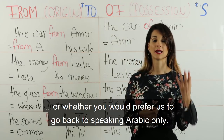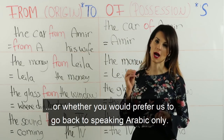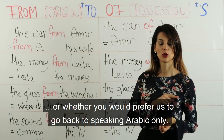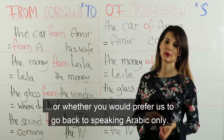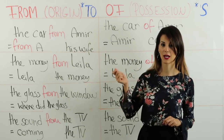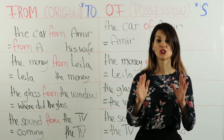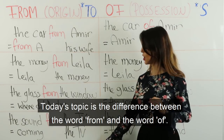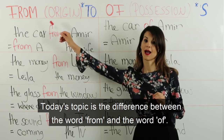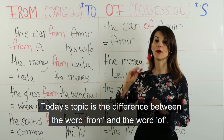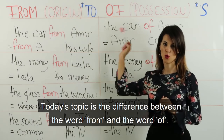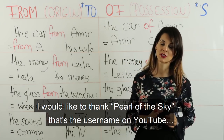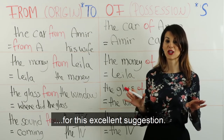Hello everyone! This is a new lesson on English grammar which will be used in English and Arabic, and which will mean that this video will be slightly longer. Today's topic is the difference between the word 'from' and the word 'of'. I would like to thank لؤلؤت السماء — that's the username on YouTube — for this excellent suggestion.